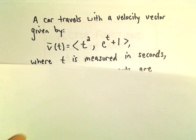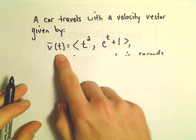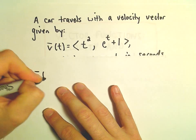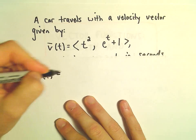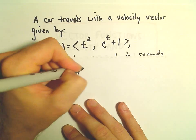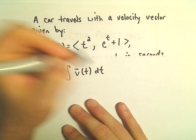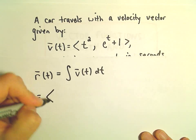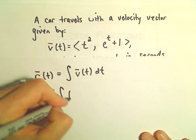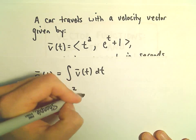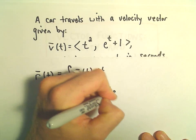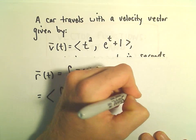To do this, if we're given velocity, to get back to our position vector r(t), we're going to integrate our velocity vector with respect to t. So we can write this as the integral - we're just going to integrate each part: the integral of t² dt and the integral of e^(t+1) dt.